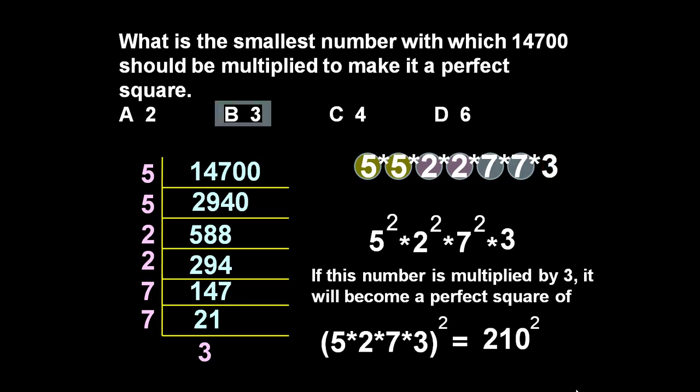So friends, the answer is 3. The given number must be multiplied by 3 to become a perfect square of 210.